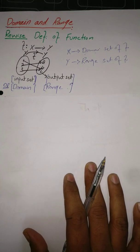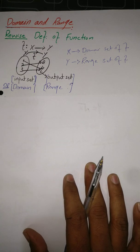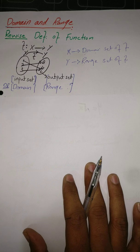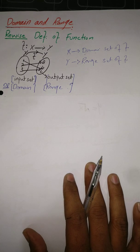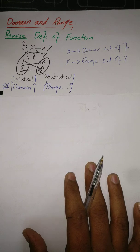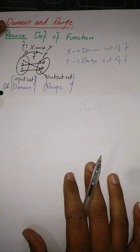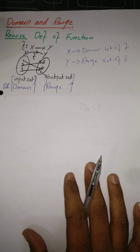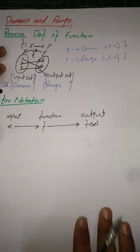When we take some algebraic expressions or mathematical formulas, some restrictions are imposed on domain and range. In this lecture we discuss those restrictions to find domain and range, and in our next lecture we will discuss how to find the domain and range. So I divide this topic into two parts, and in this part we just understand the restrictions on domain and range.